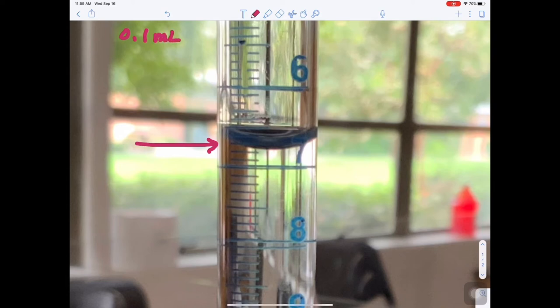We always estimate one digit. So we're going to read this to plus or minus 0.01 milliliters. Because where the lines are, there's no uncertainty. And we're going to read between the lines to get an estimate.